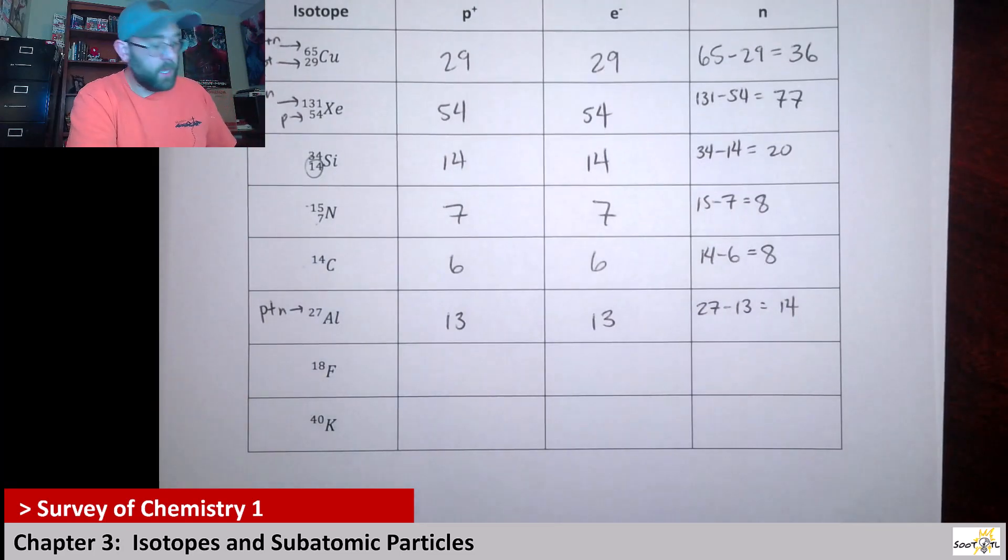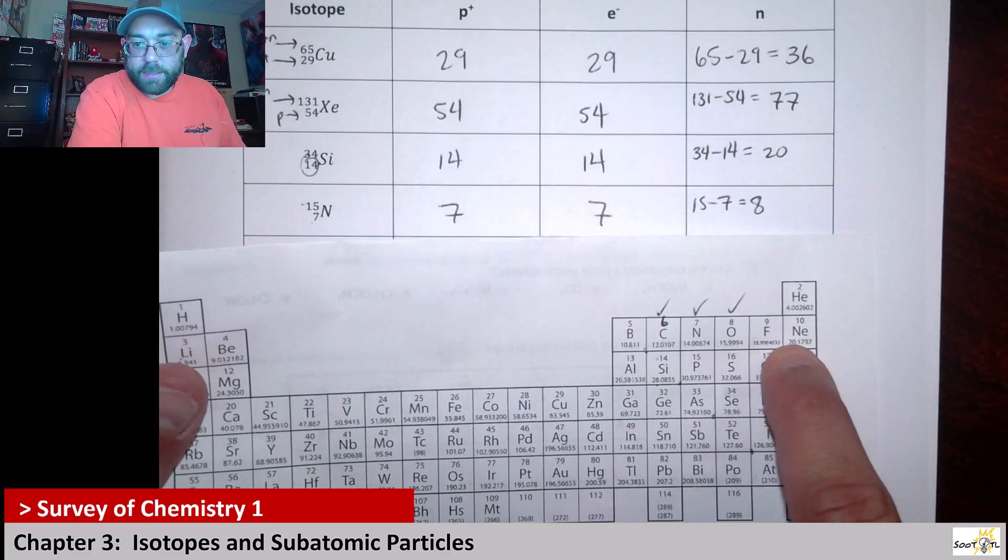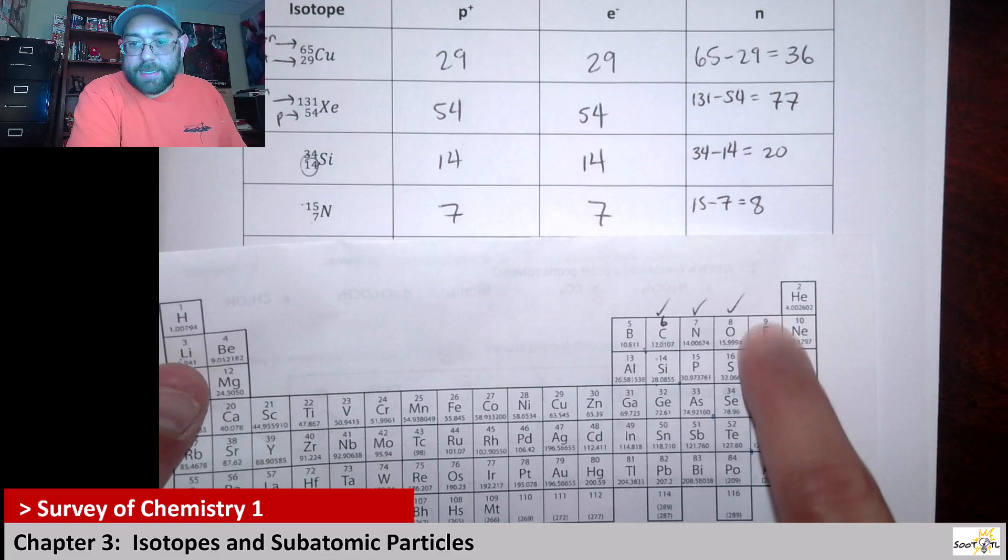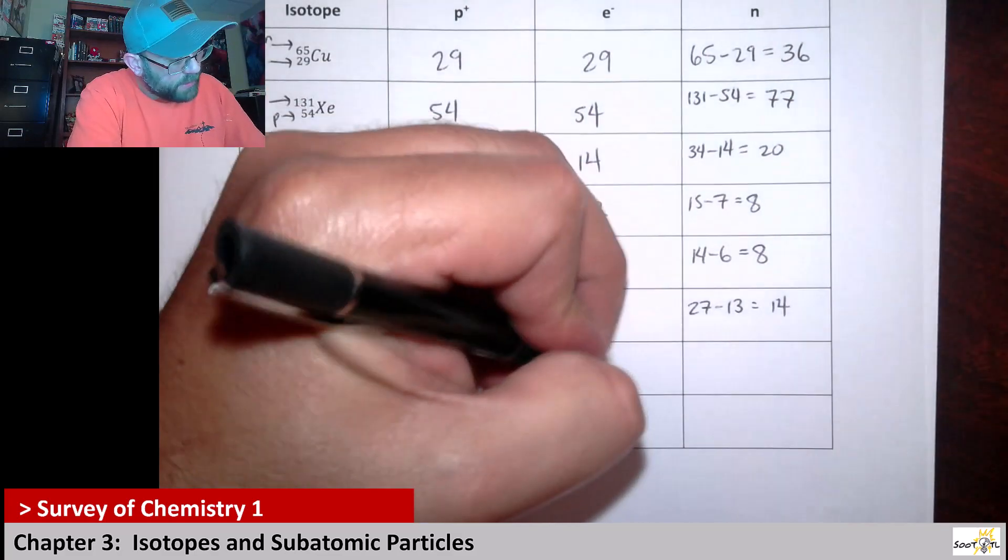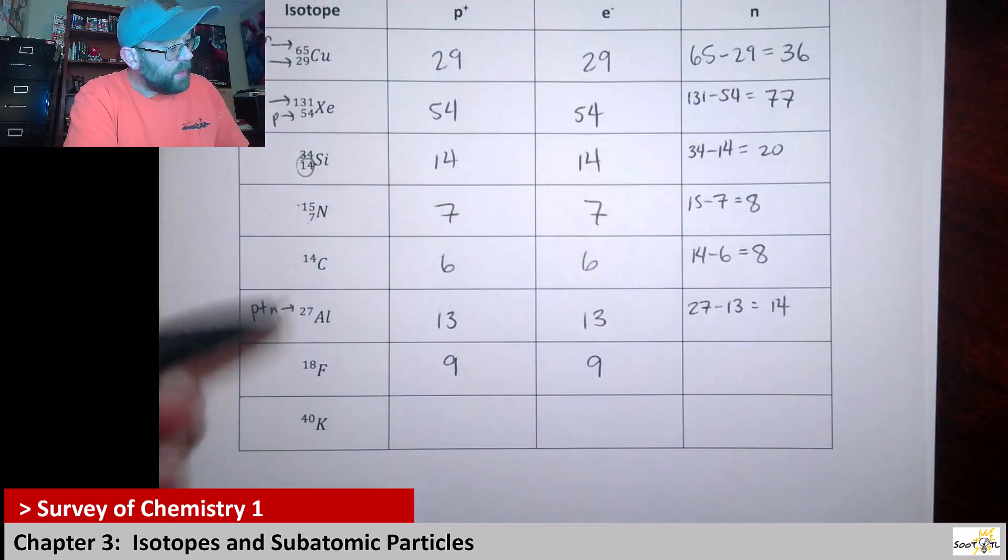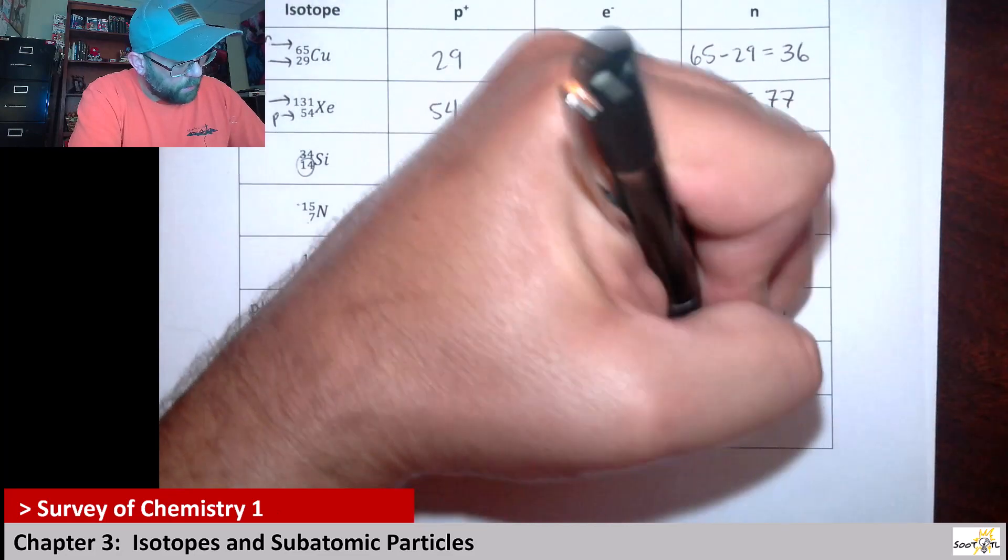Next up we have F, or fluorine, right here on the periodic table, right next to neon. We see that has a 9 on top, so we know that it has 9 protons. We see that it's neutral, so it has 9 electrons. Then to get our number of neutrons, we need to say 18 minus 9, which will give us 9.